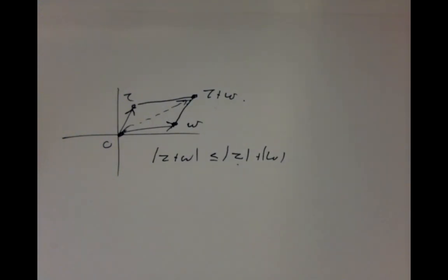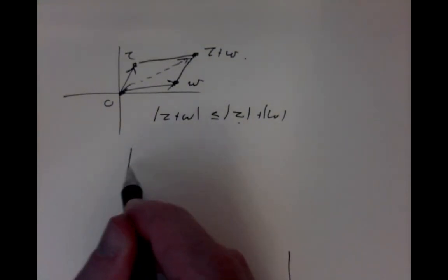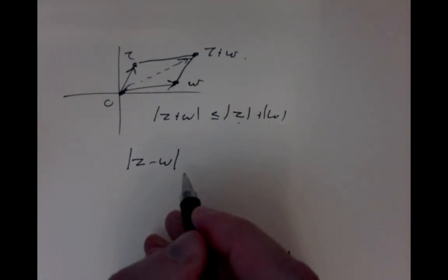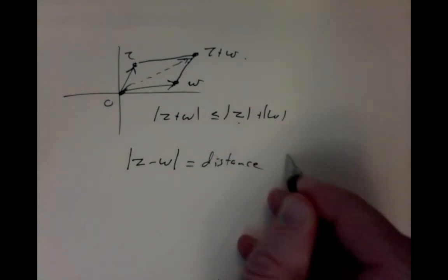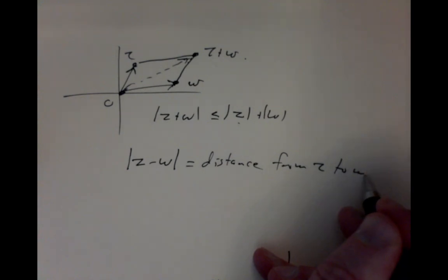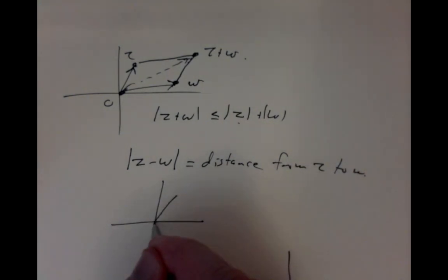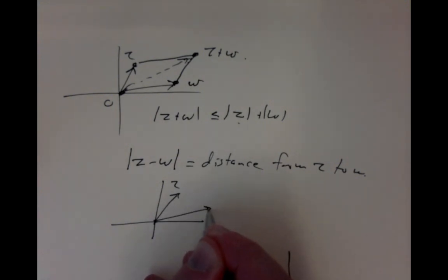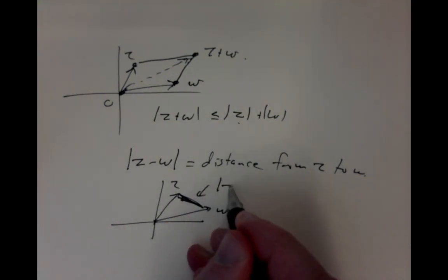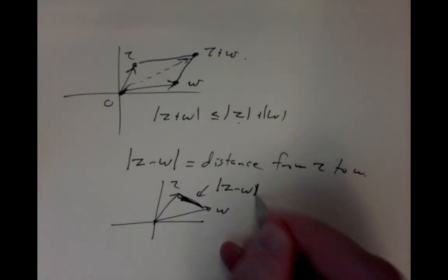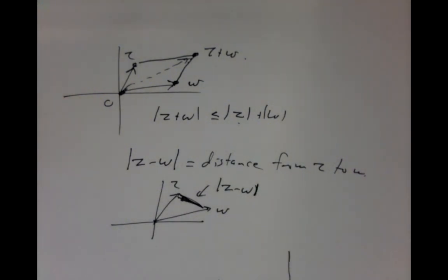Another obvious observation is simply that the magnitude of the difference of two vectors is the distance between them. So if we think of it that way, the distance between two complex numbers Z and W is the length from Z to W, which is exactly the magnitude of Z minus W. That's true of any vector, so it has to be true in this picture as well.